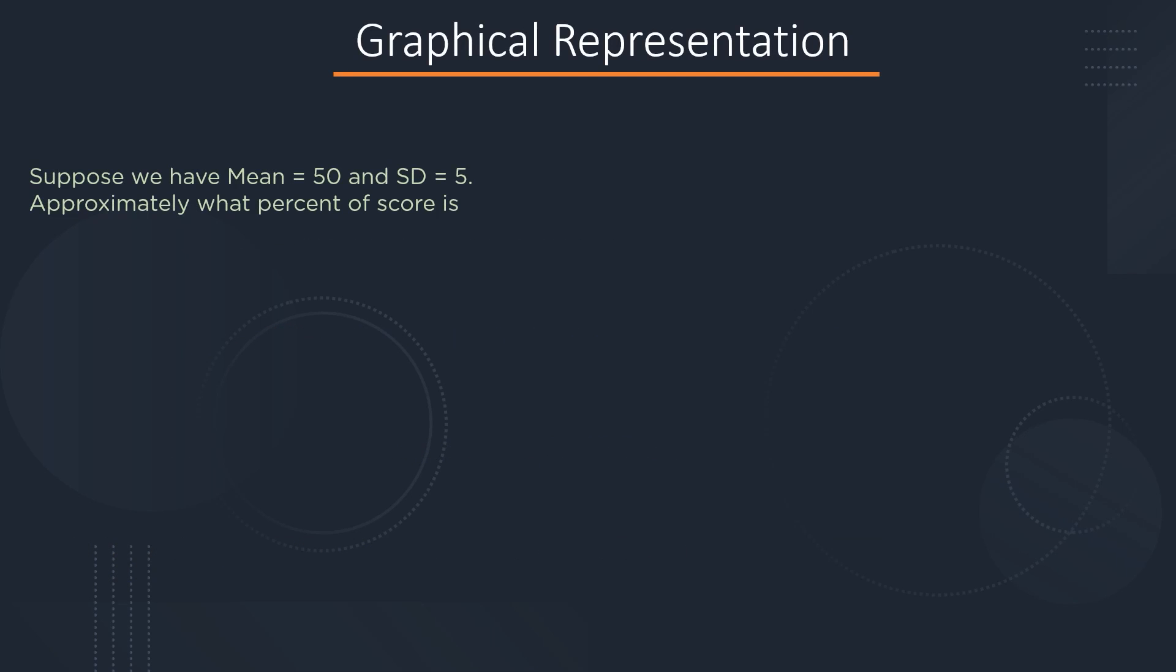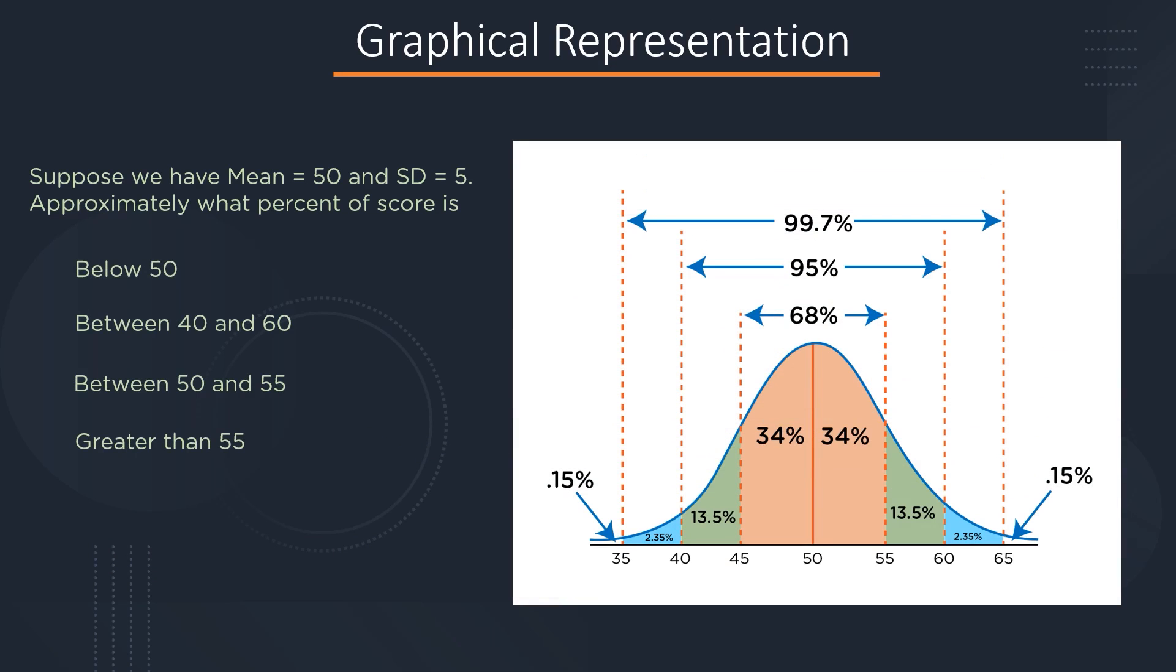Suppose we have a bell-shaped distribution with mean value 50 and standard deviation 5. Since the mean is 50, one standard deviation to the right will be 55, two standard deviations will be 60, and three standard deviations will be 65. In a similar manner, one standard deviation from the left will be 45, two standard deviations will be 40, and three standard deviations will be 35.